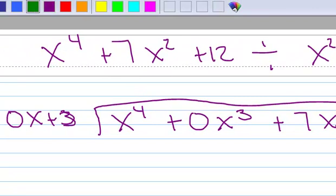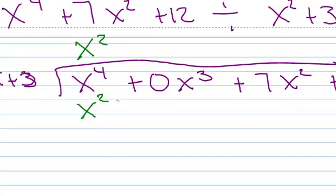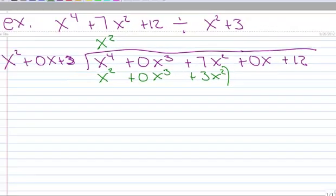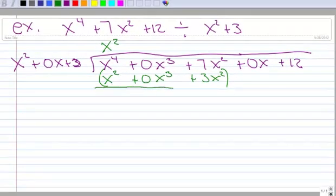So, x to the fourth divided by x squared, that's going to be x squared. Now, let's multiply it out. x squared times x squared is x to the fourth. x squared times 0x is 0x cubed. x squared times 3 is plus 3x squared. And, of course, we're going to subtract those.